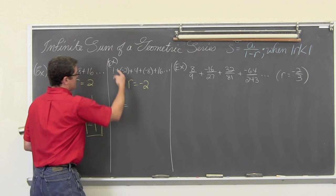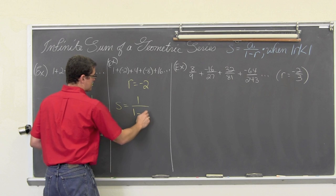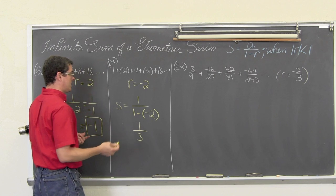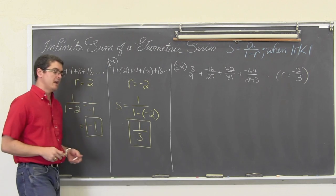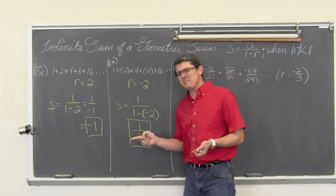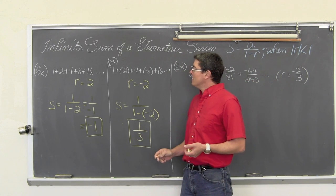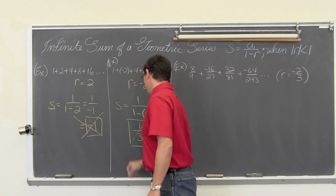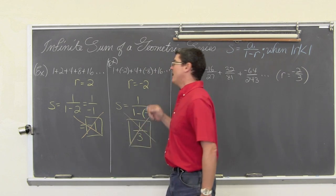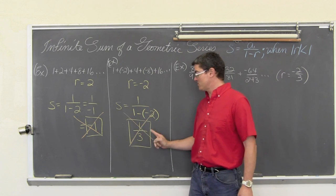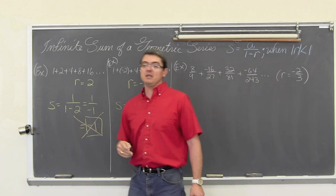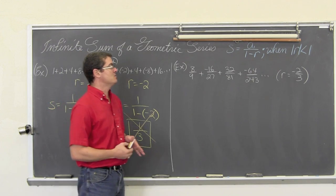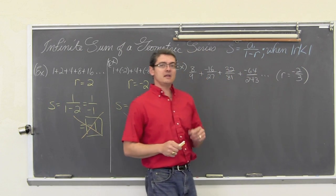Well, here s is equal to a sub one again, which is one, over one minus r, which is negative two. That is going to be one over three, which supposedly is the answer. Again, this might be a bit more believable. I am not exactly sure how, but at least we don't have a bunch of positive numbers adding up to a negative sum. But neither one of these are valid because we have r values that are outside the range of negative one and one. So, just because you get a number from this formula doesn't mean, well, this formula doesn't mean that it is a valid answer. Do not use this when the absolute value of r is anything other than less than one.